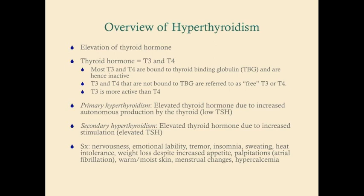Primary hyperthyroidism accounts for 99% of hyperthyroidism cases. It involves elevated thyroid hormone due to increased production by the thyroid gland. Because the thyroid is creating too much thyroid hormone, you will have high T3 and high T4, and therefore a low TSH due to negative feedback.